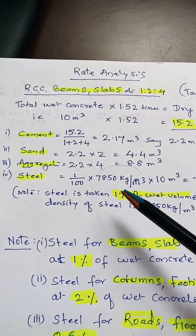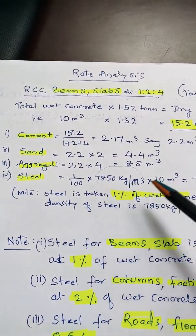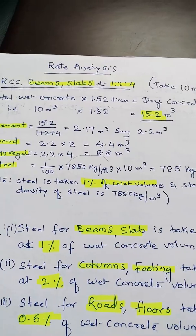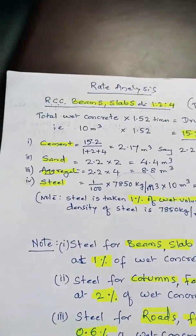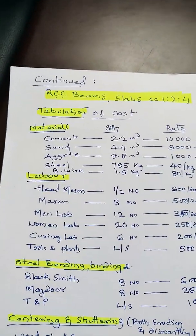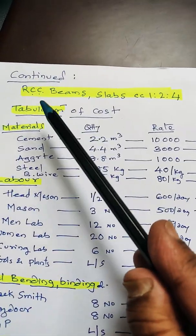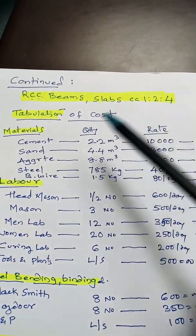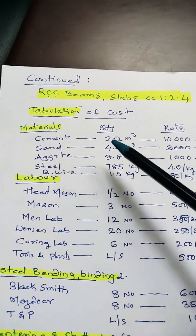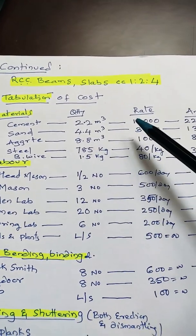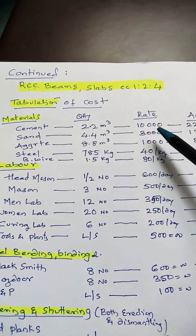Now we will tabulate the cost. RCC Beams/Slabs at 1:2:4. Tabulation of cost: Cement 2.2 m³ at rate 10,000 rupees per m³ = 22,000.